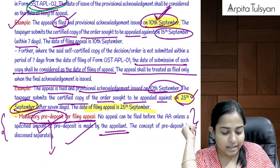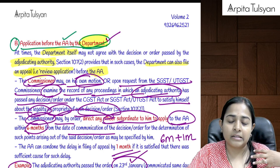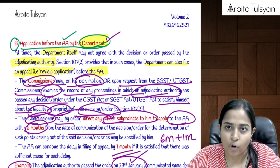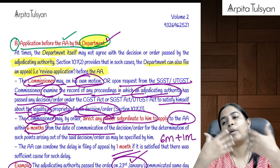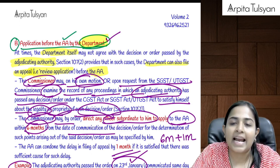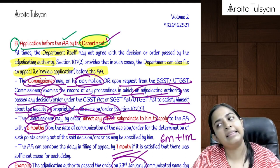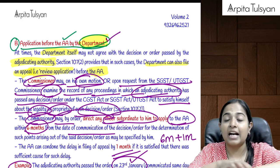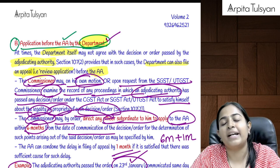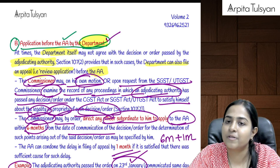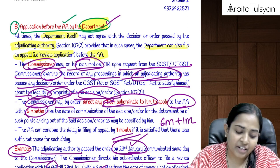A very important requirement: whenever the taxpayer files an appeal before the appellate authority, he must pay a mandatory pre-deposit of some tax amount. Only then will the appellate authority accept the appeal. If not paid, recovery proceedings will start with no stay during the appeal.